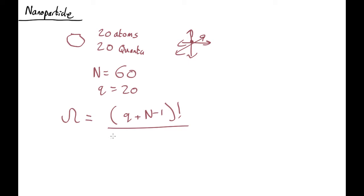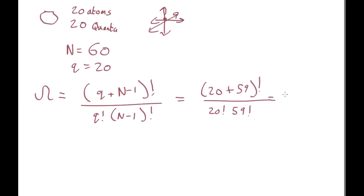which in this case comes out as 20 plus 59 factorial, all over 20 factorial 59 factorial, which is 2.6 by 10 to the 18 possible ways you can arrange those 20 quanta between 60 oscillators.